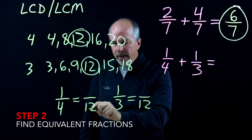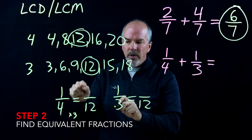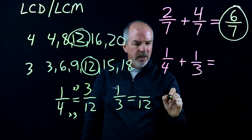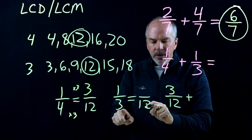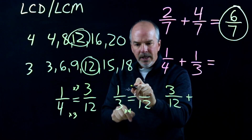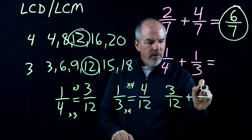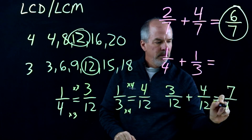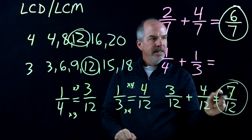What do I do to the 4 to make it a 12? It's times 3. So we have that equal sign — if we do something to the denominator, we have to do it to the numerator. So times 3 gives us 3 over 12. My 1/4 becomes 3/12. Now my 1/3 — what do I do to the 3 to make it a 12? That's times 4. We do it to the bottom, we have to do it to the top. Times 4, so it's 4/12. So 3/12 plus 4/12 equals 7/12. So 1/4 plus 1/3 equals 7/12.